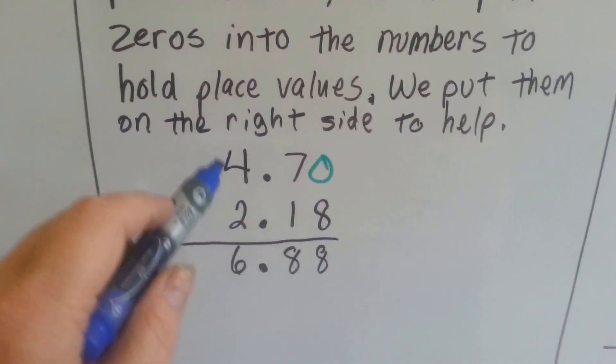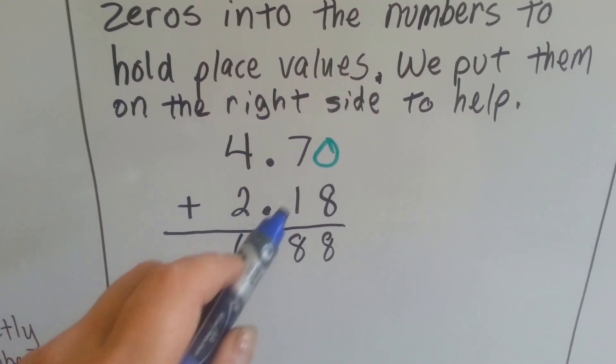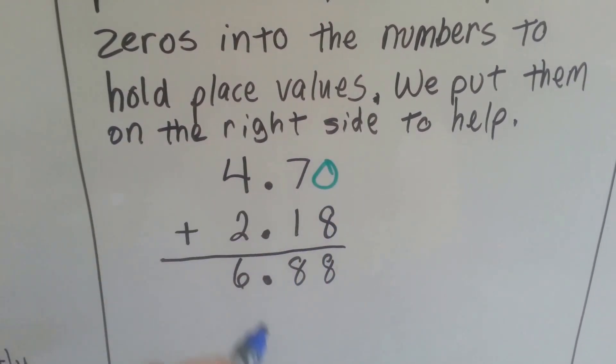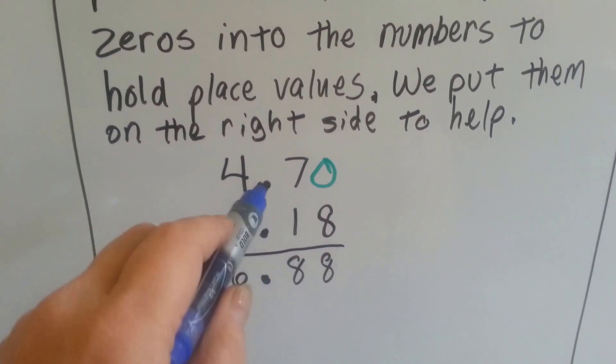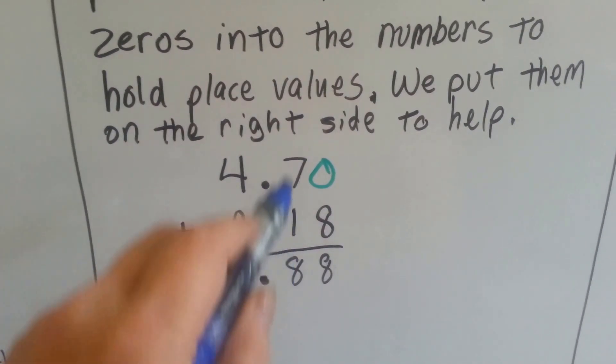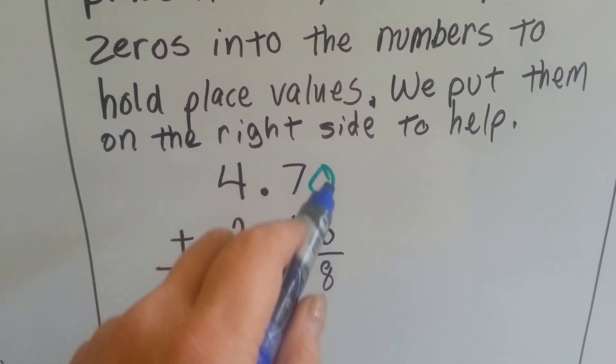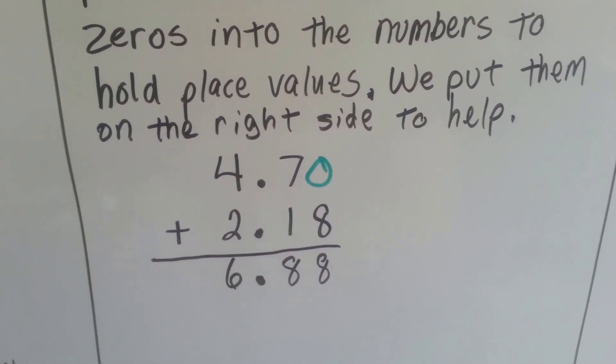If we were adding 4 and 7 tenths to 2 and 18 hundredths, we could put a zero there to help us with our place value. We know it's correct because all our decimal points are lined up all pretty, and we're going to add 7 tenths to 1 tenths, but the 8 has nothing to add to, so we can put a zero there to help us mentally.